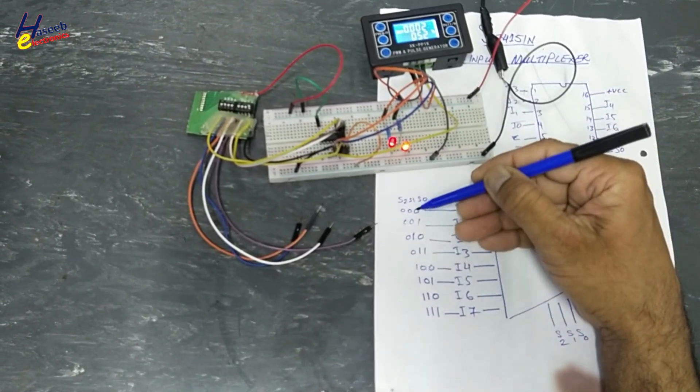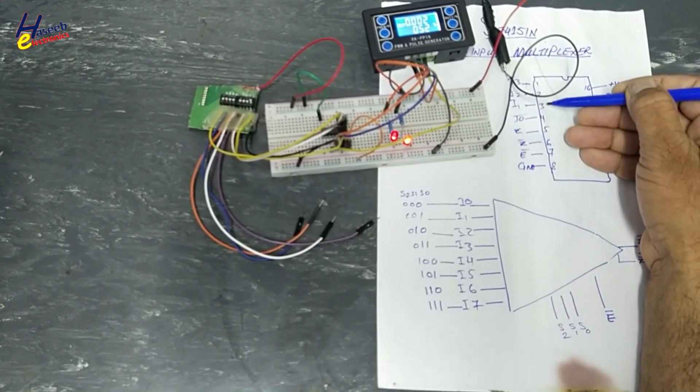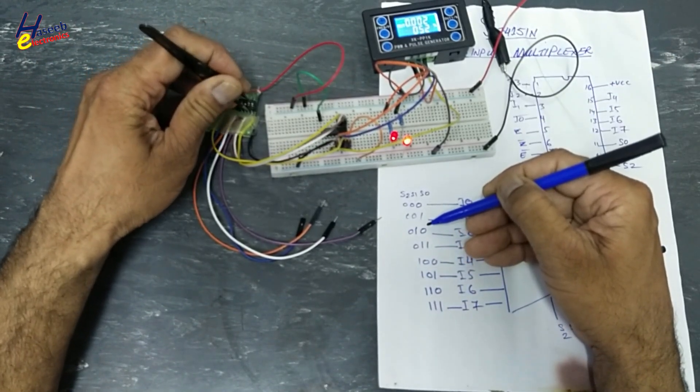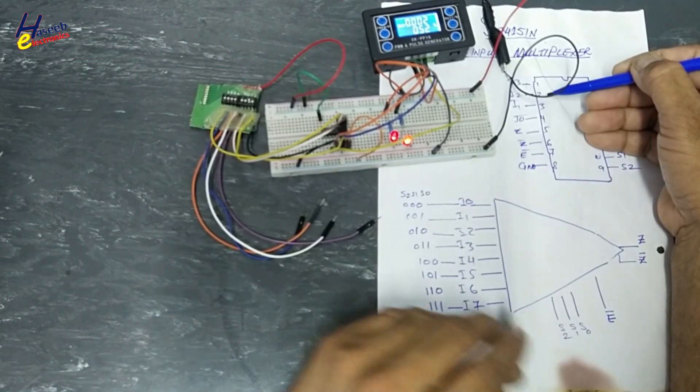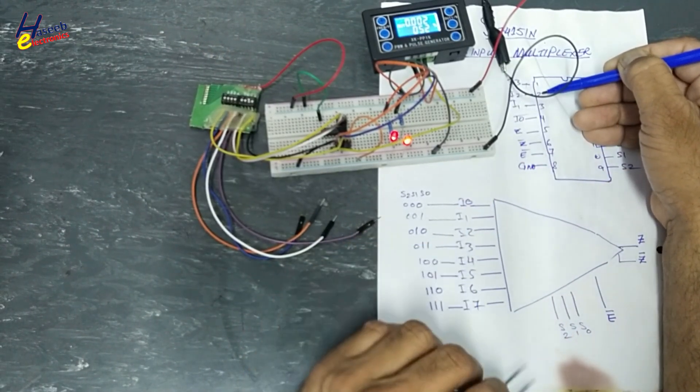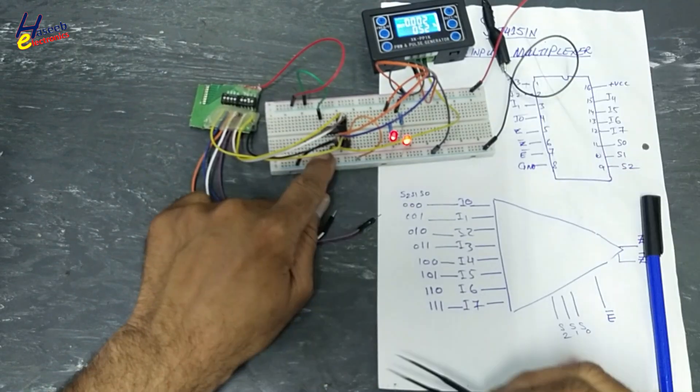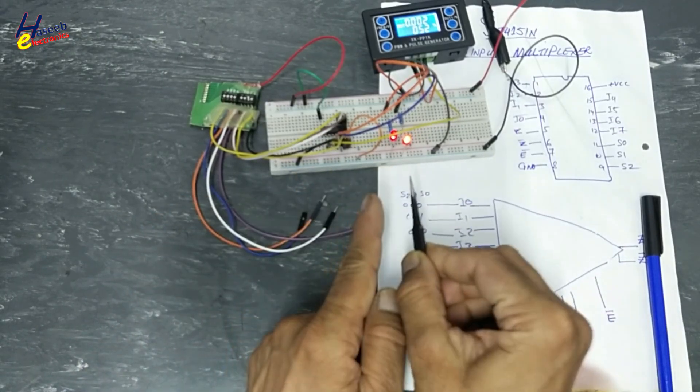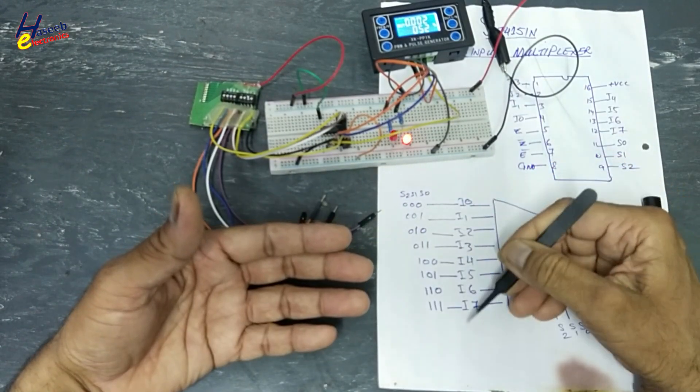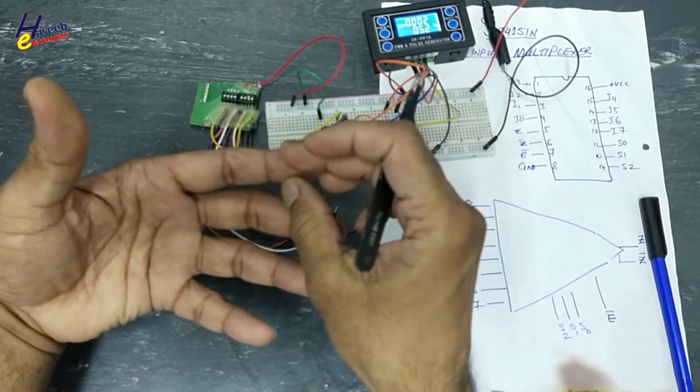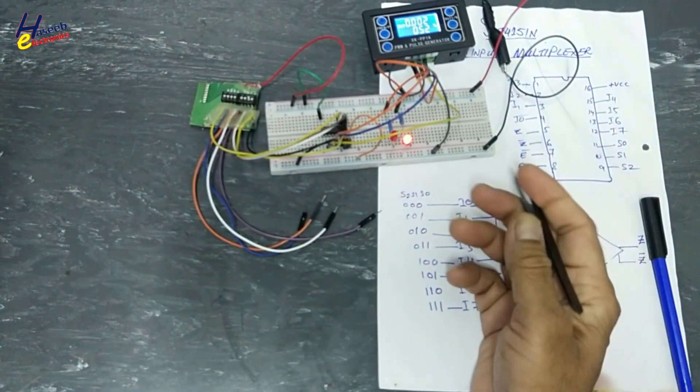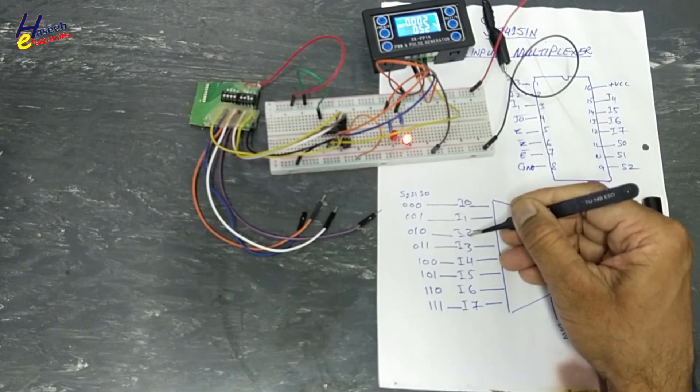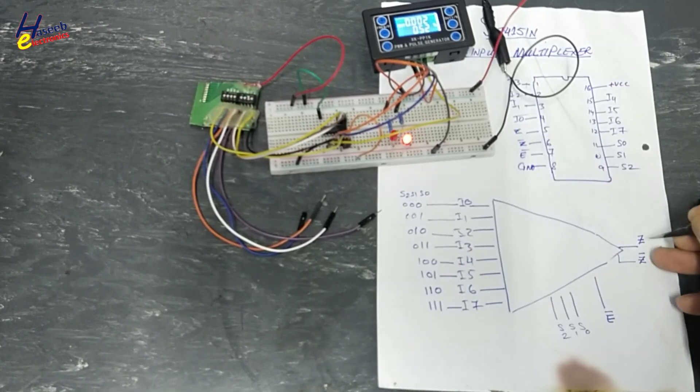Before this address 0, 0, pin number 4. Now pin number 3. Now I will select 0, 1, 0. That is I2. Input 2. Input 2 is now open. Blank. If I will inject this signal at pin number 2, this time I am connecting manually. If these pins are already connected to any circuit, there are different frequency signals. Let's suppose this one is connected to 100 hertz. Here 1 megahertz. Here 4 kilohertz. That signal will reach to output.